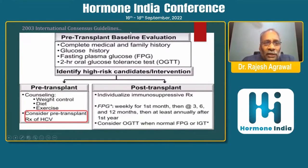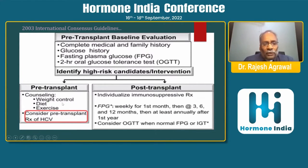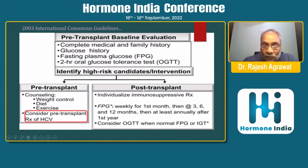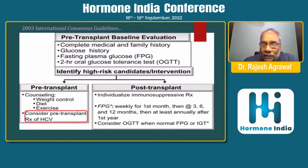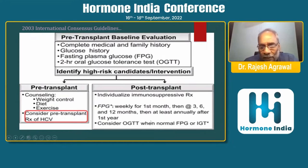The 2003 international consensus guidelines recommend evaluating the patient pre-transplant with complete history, glucose and glycemic status assessment, and identifying high-risk patients. Counseling should be done to reduce weight, improve diet and exercise, and pre-transplant treatment of hepatitis C virus should be addressed. In the post-transplant period, individualization of immunosuppressive therapy and fasting plasma glucose monitoring weekly for the first month, then at 3, 6, and 12 months, and at least annually thereafter is recommended.